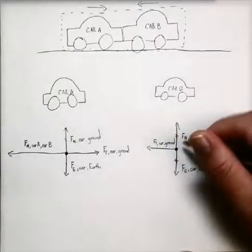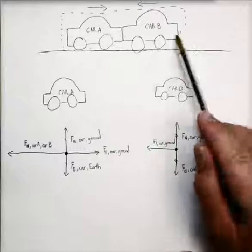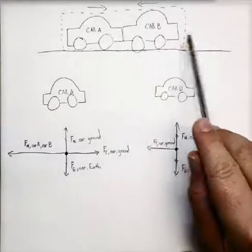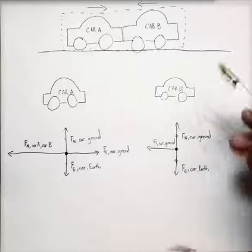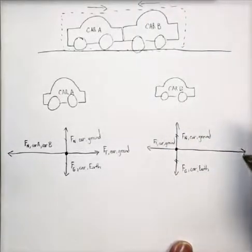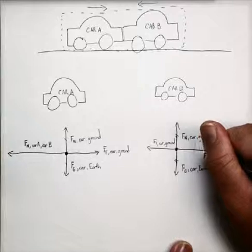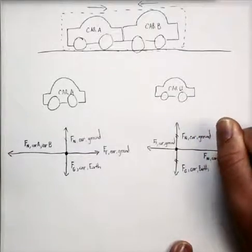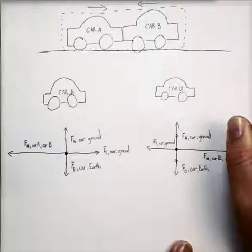And now we have for car B running into car A going this direction, car A is going to put a huge force on it that's going to stop car B. And let's look at where that force comes from. Again, they're touching, so this is a normal force on car B from car A.